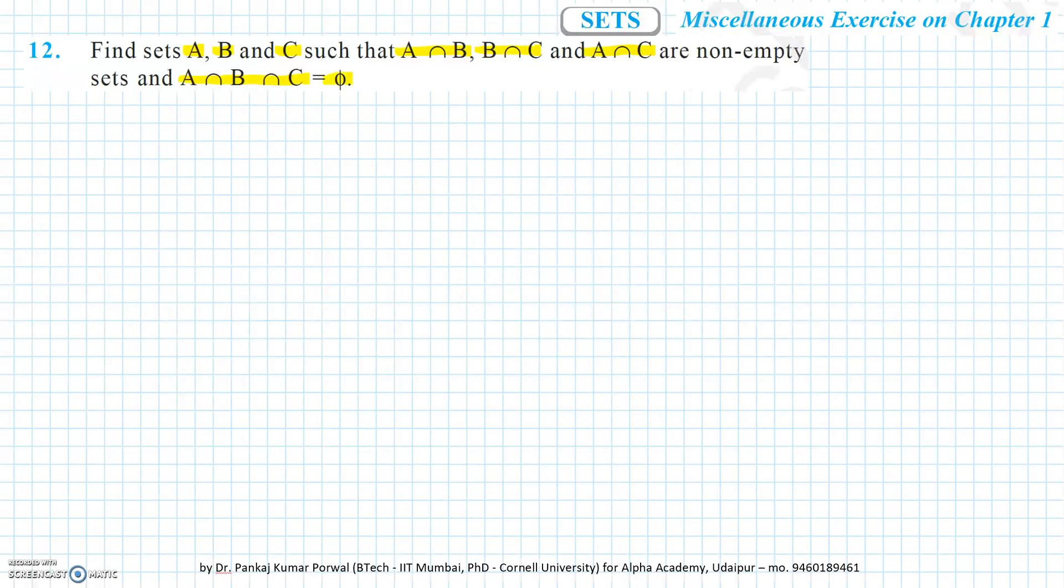So let's solve this question. Let's take A equals to the set containing numbers 2 and 3, set B equals to the set containing numbers 3 and 4, and set C equals to the set containing numbers 2 and 4.